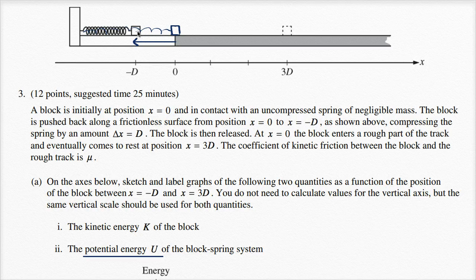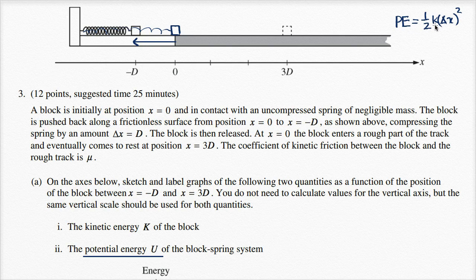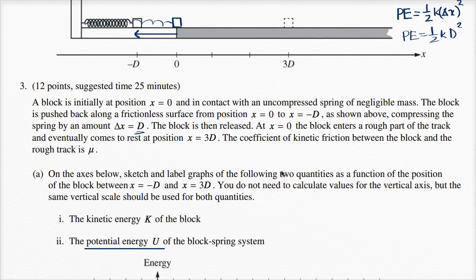Let's first focus on the potential energy U. When we're compressing the spring, that's when we're starting to put potential energy into this spring-block system. The potential energy of a compressed spring is equal to one half times the spring constant times how much you compress the spring squared: U = ½k(Δx)². So when compressed by d, the potential energy is ½kd². The work necessary to compress the spring equals the potential energy put into that system.